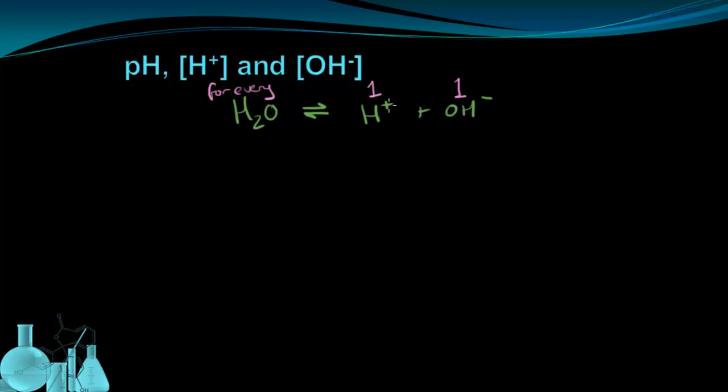Every time a hydrogen ion is made, so is a hydroxide ion. And that's why we get equal concentrations at pH 7. The hydrogen ion concentration equals the hydroxide concentration.